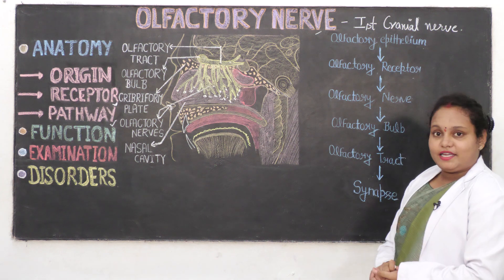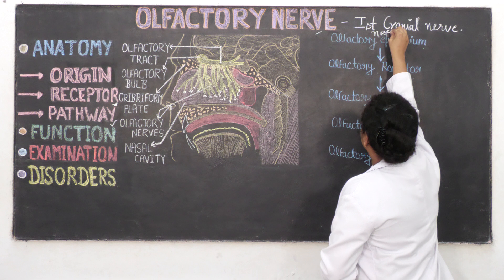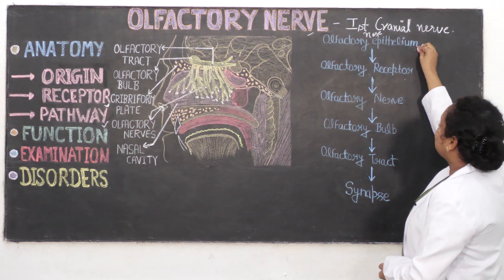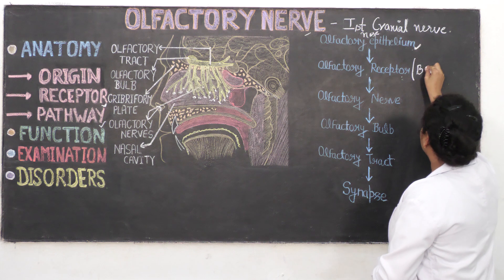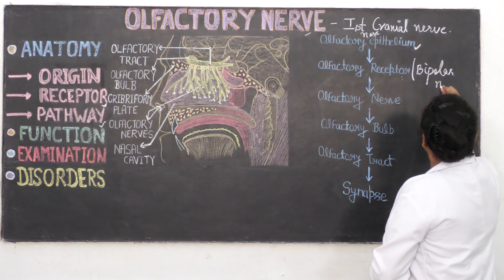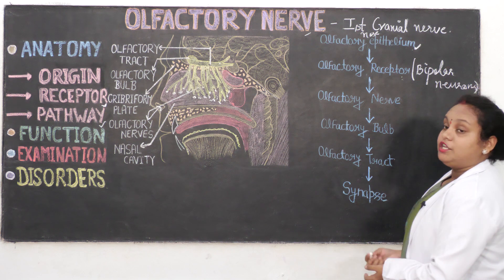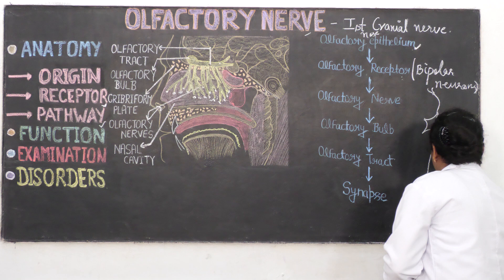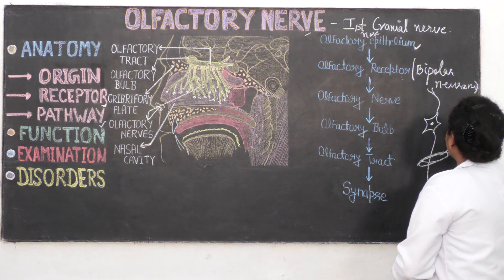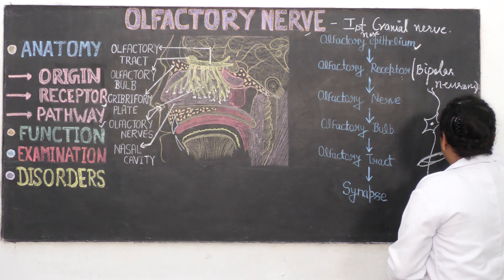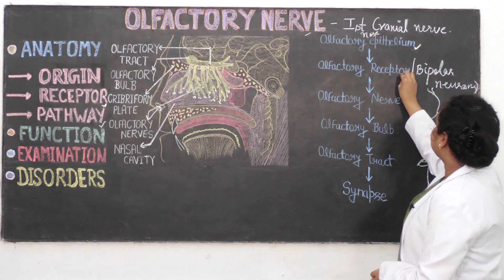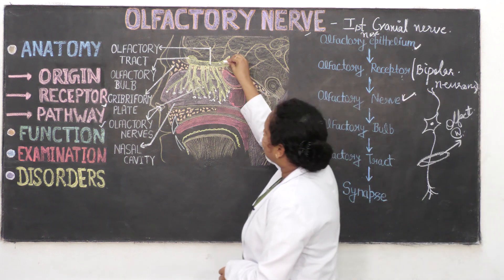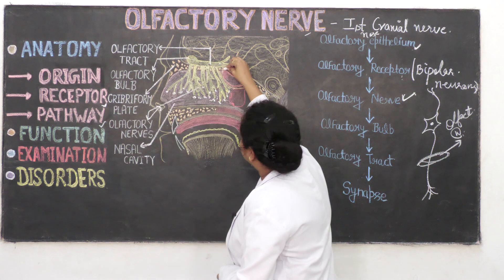So you are watching a flowchart. The olfactory nerve originates in the olfactory epithelium present in your nose. From there, it travels via the olfactory receptors, which are bipolar neurons. The axons of these bipolar neurons form the olfactory nerve, which passes through the cribriform plate.